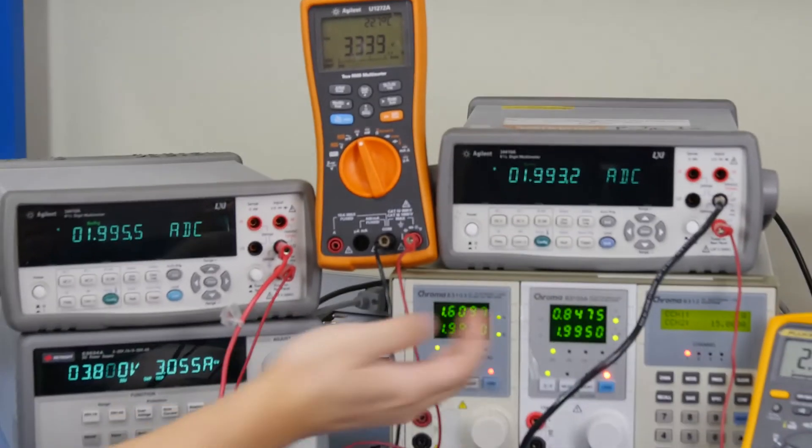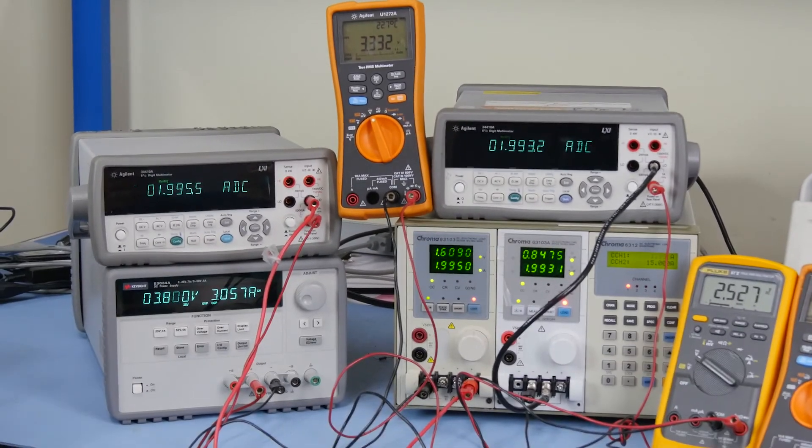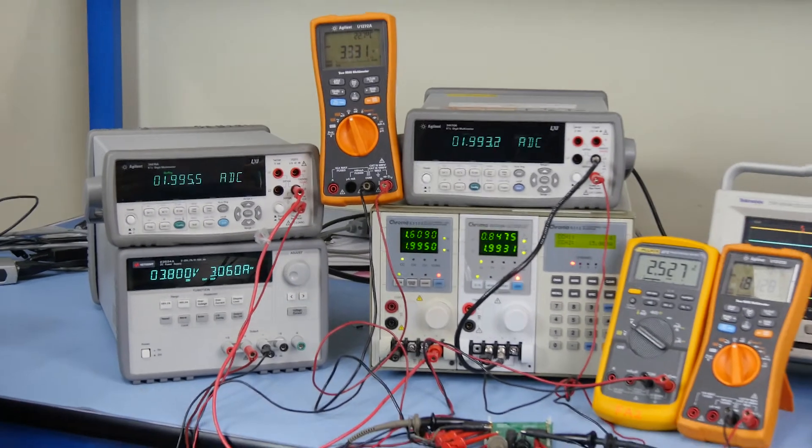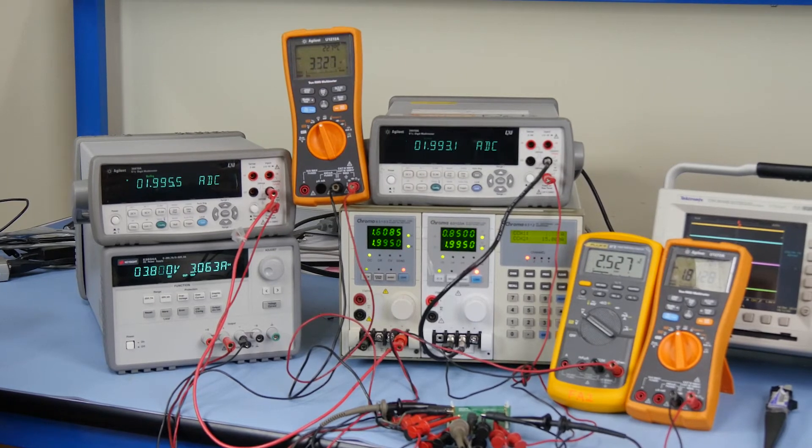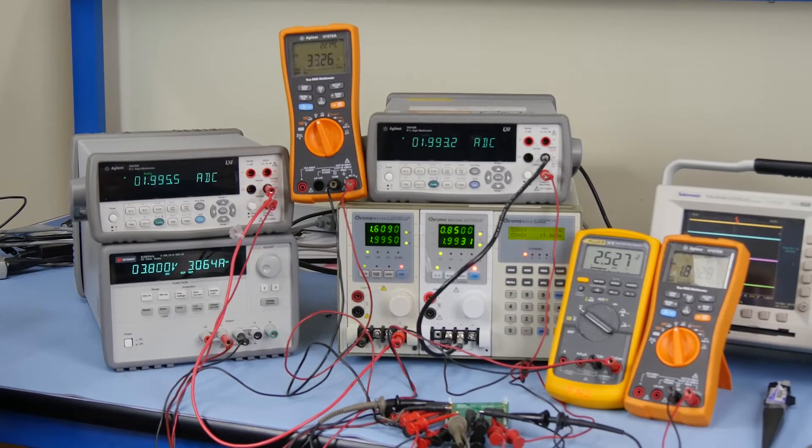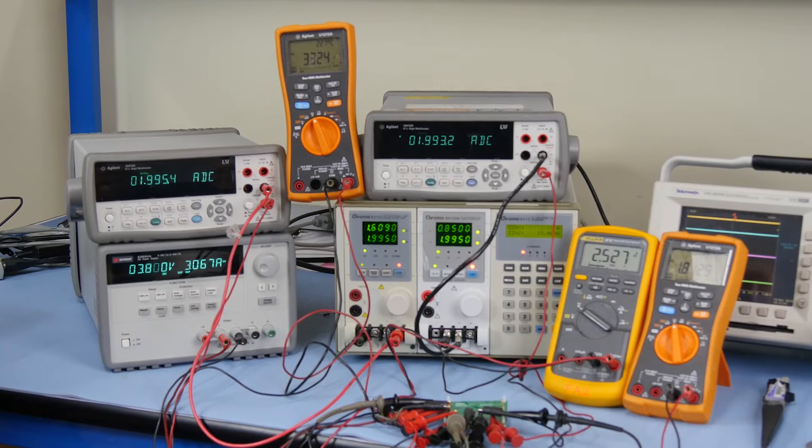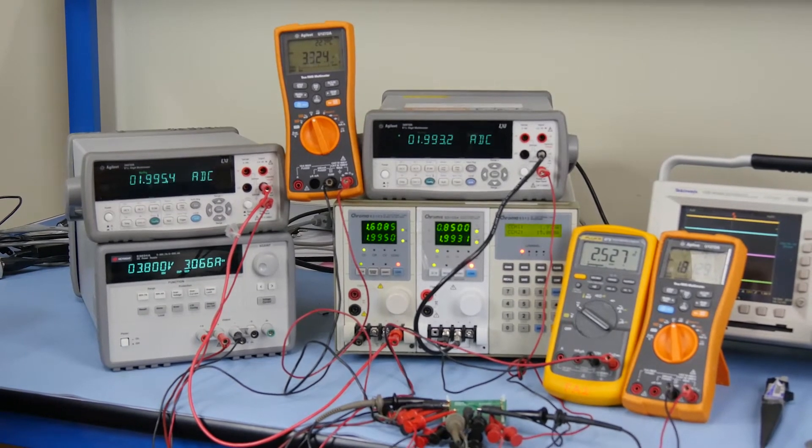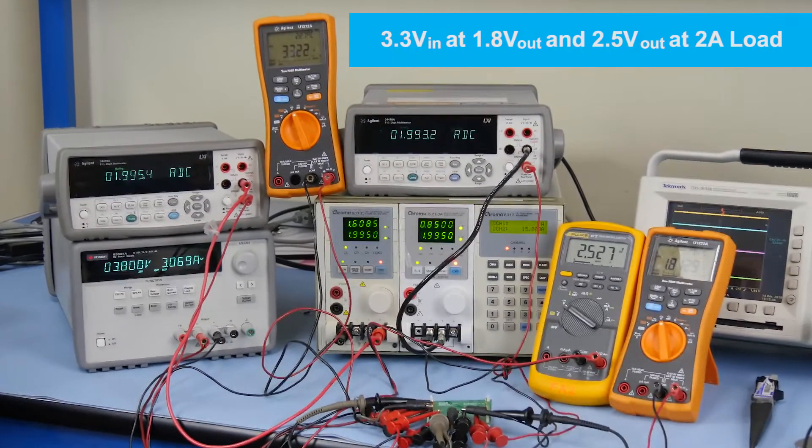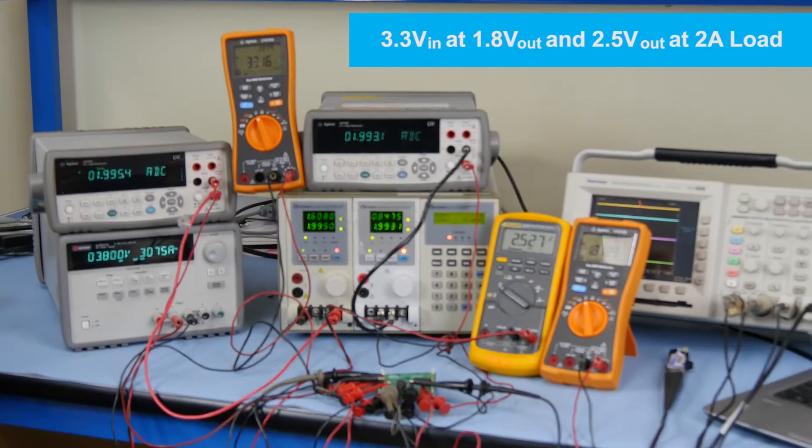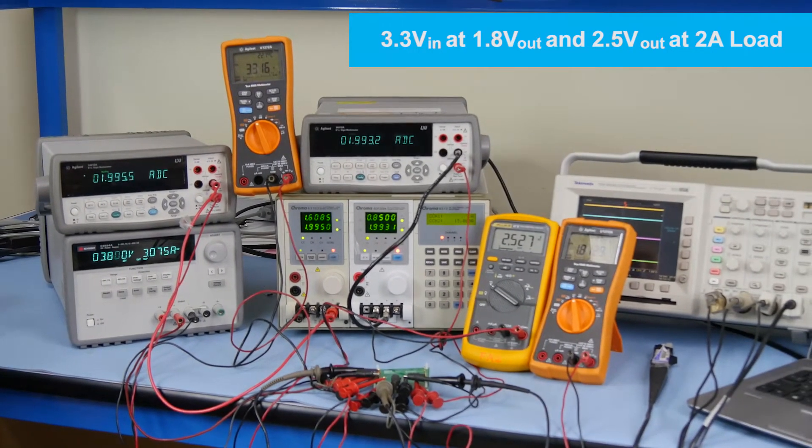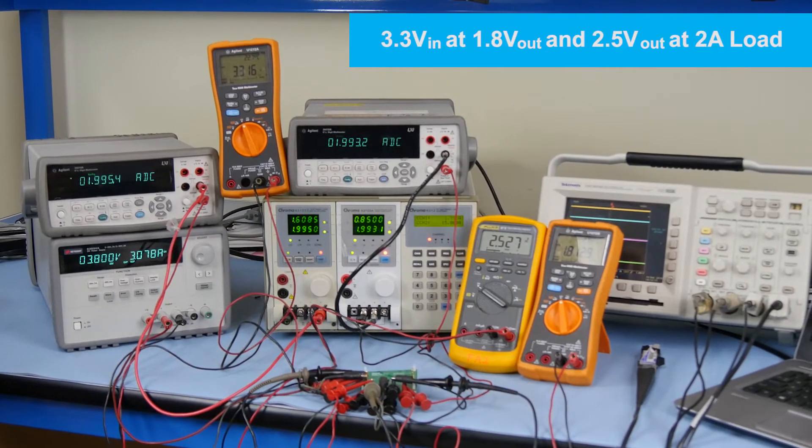Adjust the load current on the electronic load and connect the input power supply to the VIN and ground pins. The last step is to apply the load current to the loads and start taking measurements. Let's say we want to measure efficiency for 3.3V in at 1.8V out and 2.5V out at 2A load.